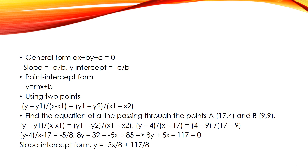This is the equation of a straight line passing through points P1 (x1, y1) and P2 (x2, y2). For example: find the equation of a line passing through points A (17, 4) and B (9, 9).